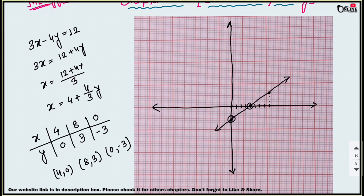Mark the points and draw the straight line through them. Now for the second part: find the value of y when x equals minus 4. Locate minus 4 on the x-axis — that's minus 1, minus 2, minus 3, minus 4. Reading across to the line and up to the y-axis gives y equal to 6.